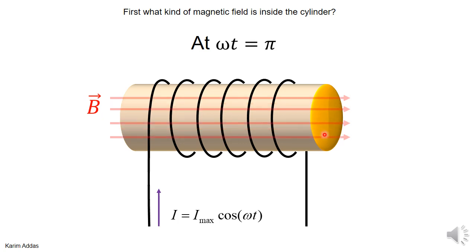If you wait further such that ωt = π, the cosine reaches its maximum negative value, so the current is downward and the magnetic field is maximum to the right. So what's happening is the magnetic field inside this cylinder is changing with time. When you have a changing magnetic field, that means a changing magnetic flux, and a changing magnetic flux will induce a non-conservative electric field. So we're trying to find this induced non-conservative electric field due to this changing magnetic field.